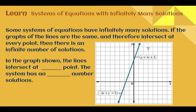Systems of equations with infinitely many solutions. Some systems of equations have infinitely many solutions. This happens when the lines are the same — one line graph is exactly on top of the other. They are technically intersecting at every point. Any point on the line is a solution, and there are infinitely many such points. If you see the same line both times, it is going to be infinite solutions.